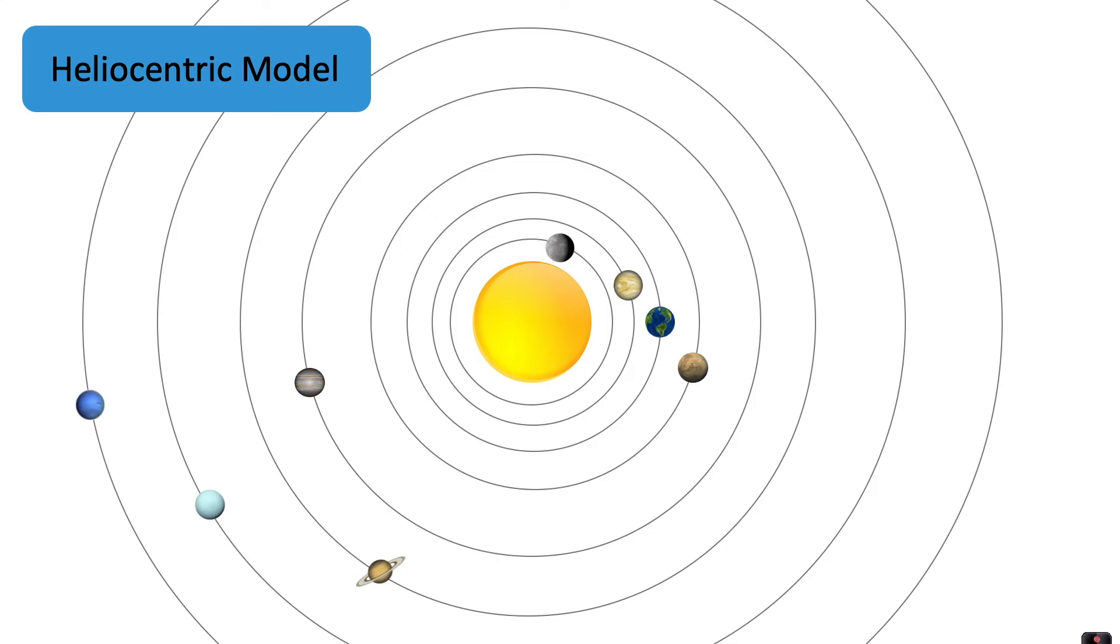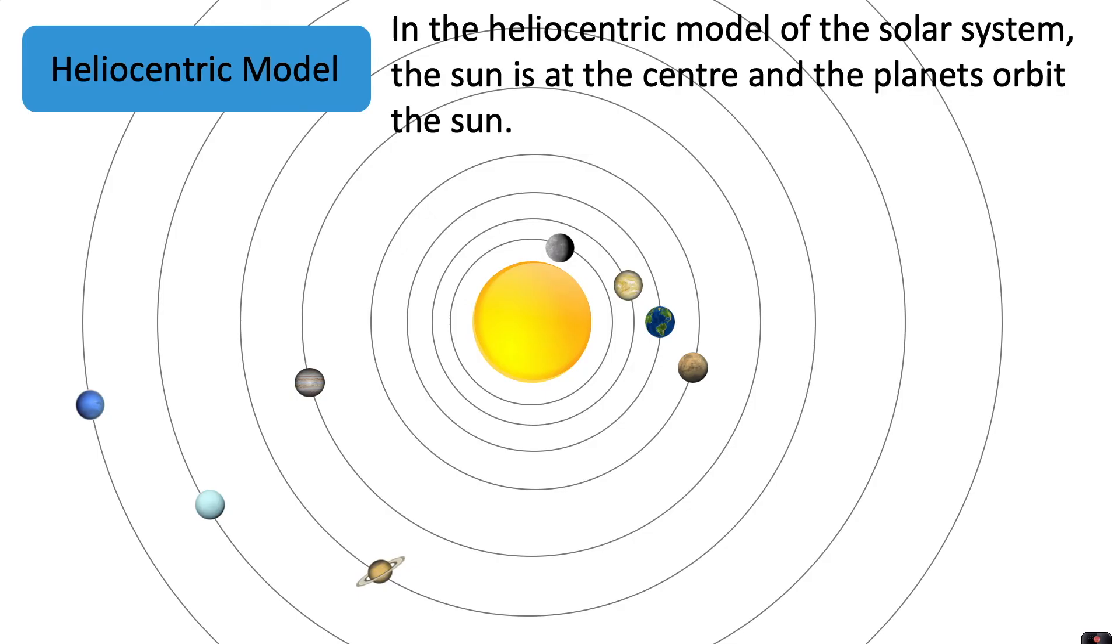This is the heliocentric model of our solar system. In the heliocentric model of the solar system, the Sun is at the centre and the planets orbit the Sun.